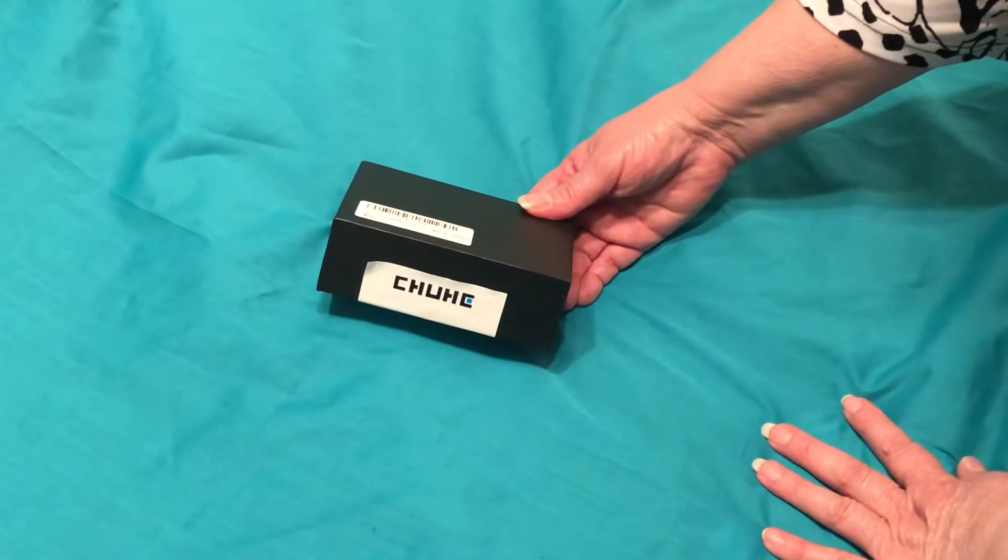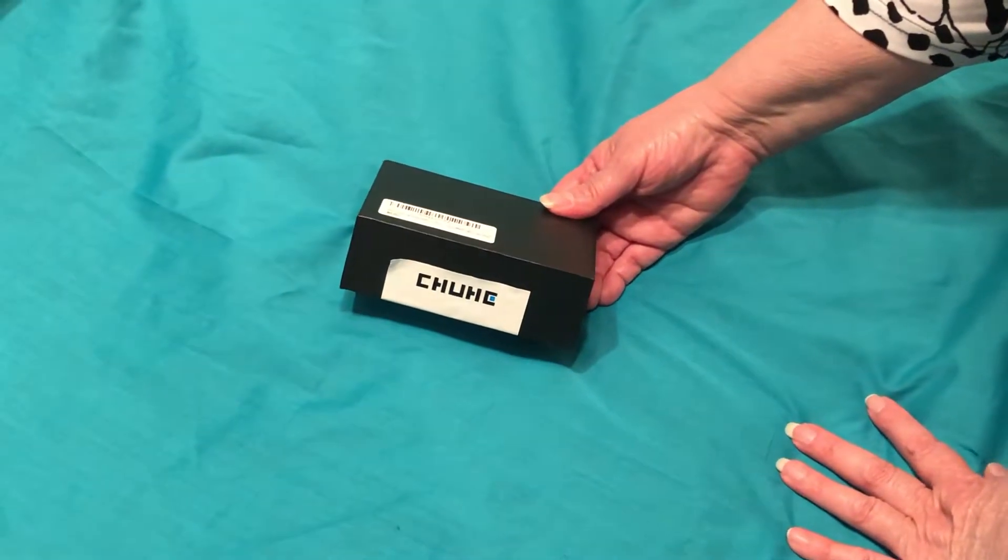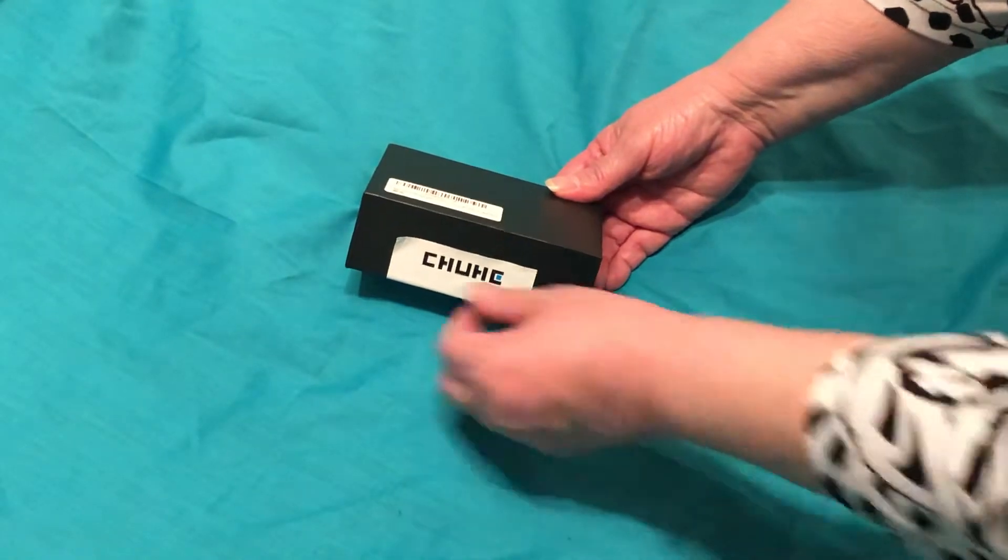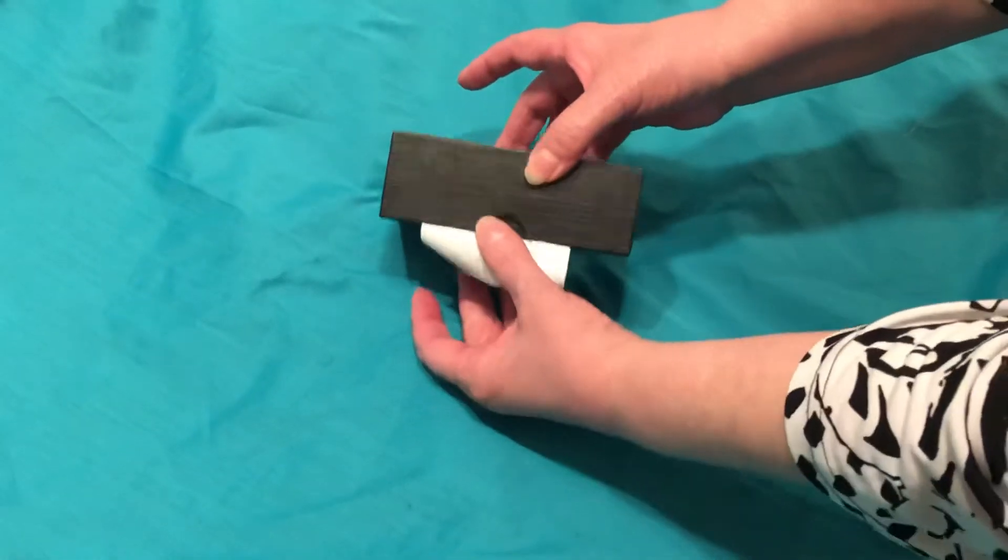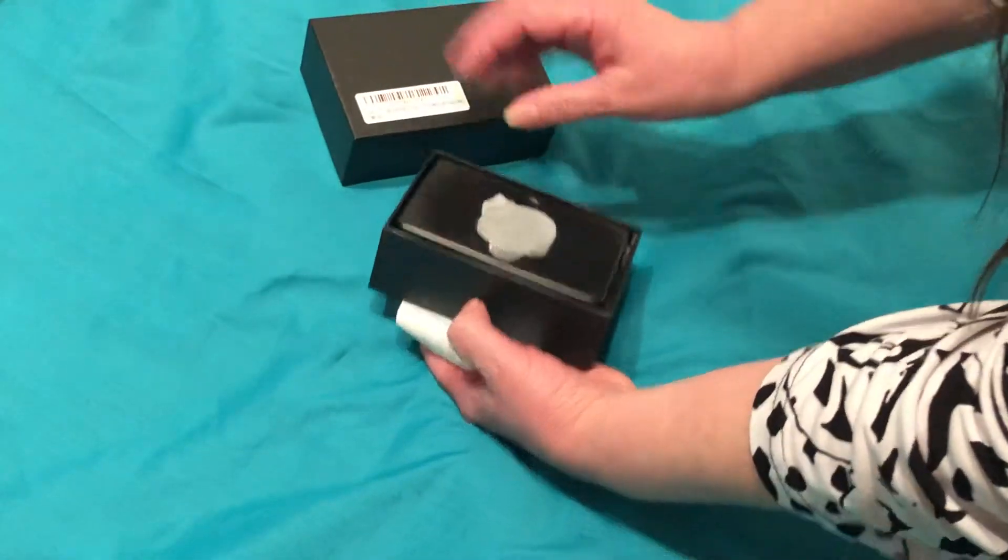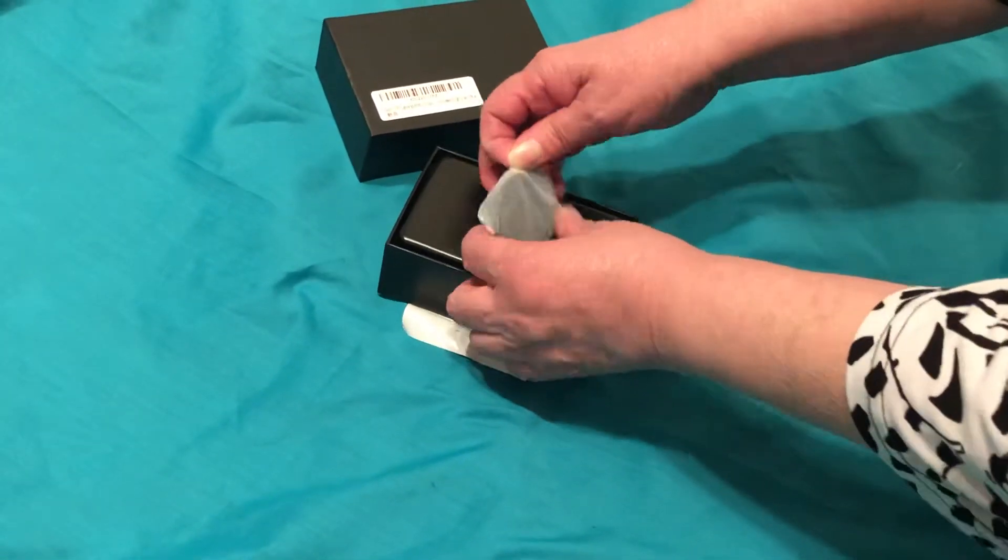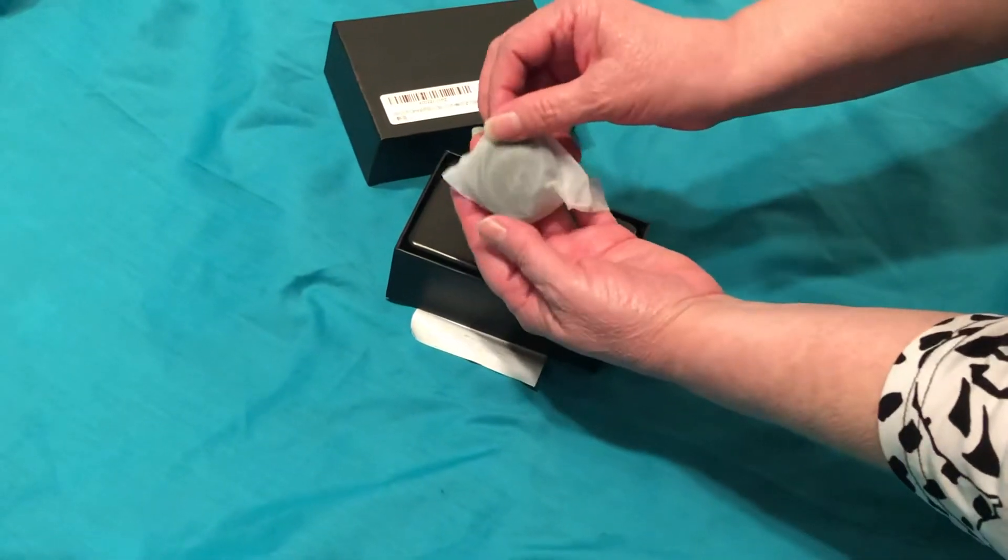This is an unboxing of a mini Wi-Fi spy camera. It's got a few attachments, but I really want you to see how tiny this is.